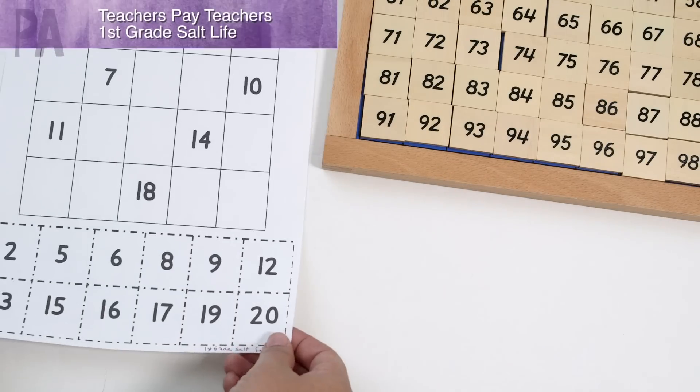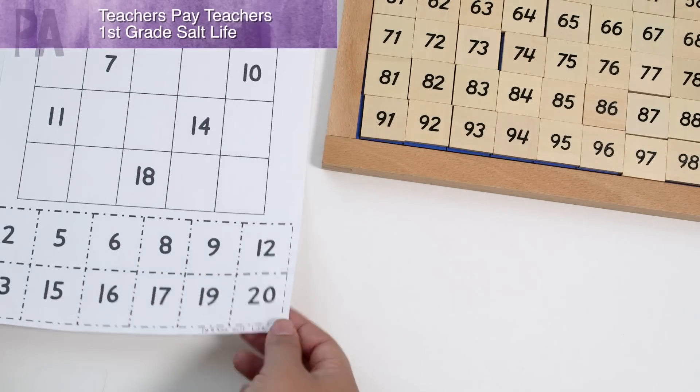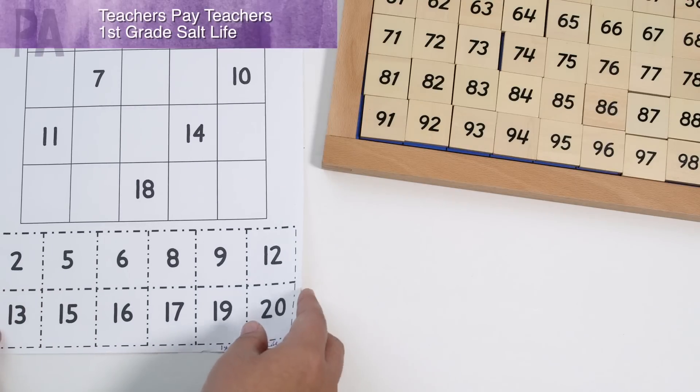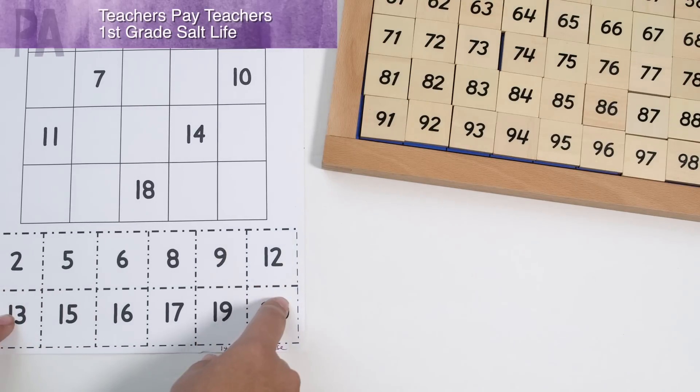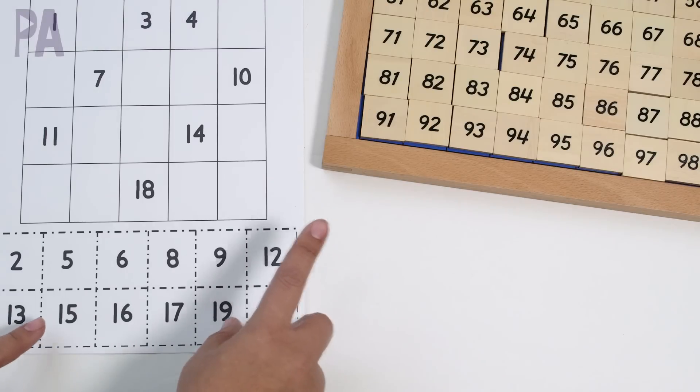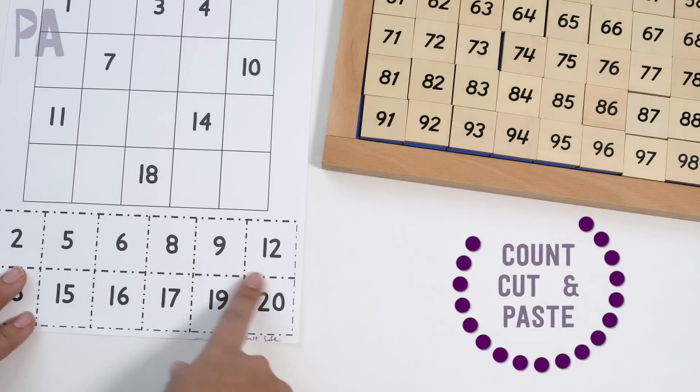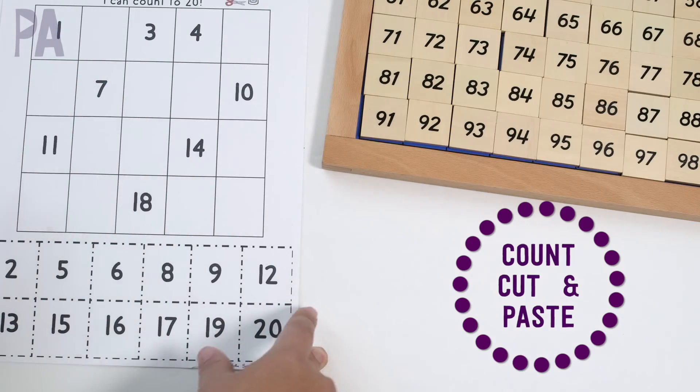The first activity is a cut and paste from First Grade Salt Life. Once again, all these printables are free and this is a simple cut and paste. This is probably the easiest one I have. Everything I'm going to show you after this is a little bit more advanced. So it's just cutting out all of the shapes down here and then gluing them in the appropriate spots.